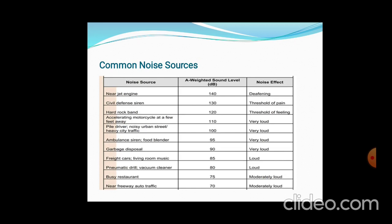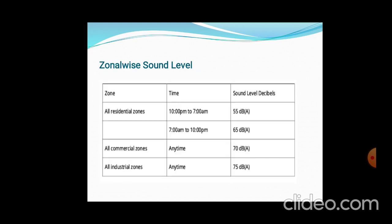Noise sources and their impacts: near jet engines — 140 dB, deafening; civil defense sirens — 130 dB, threshold of pain; hard rock band — 120 dB, threshold of feeling; ambulance sirens and blender — 95 dB, very loud; garbage disposal — 90 dB, very loud; living room music — 85 dB, loud; busy restaurant — 75 dB, moderately loud; near freeway traffic — 70 dB, moderately loud.